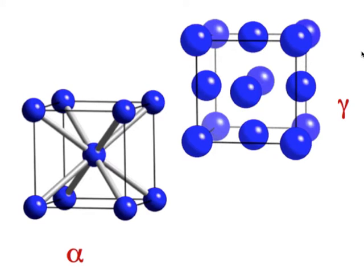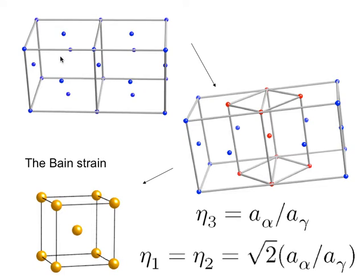These are the two crystal structures: austenite gamma on the right and alpha ferrite on the left. If I draw a couple of austenite cells next to each other and color particular atoms in red, you can see that we can represent austenite using a body-centered tetragonal unit cell. There is nothing special about this — you can represent any periodic pattern by an infinite number of unit cells.